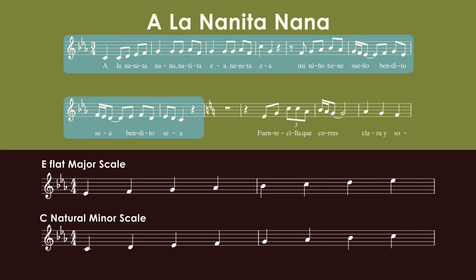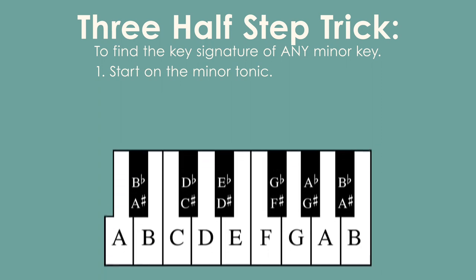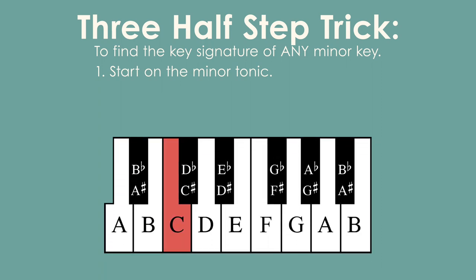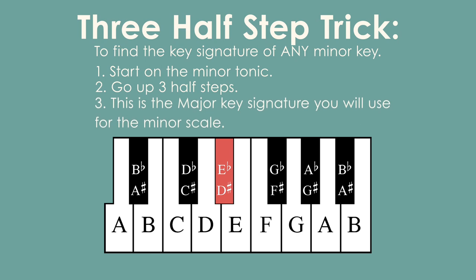We can also check this by doing the three half-step trick. To find the key signature of any minor key, start on the minor tonic — in this case C natural — and go up three half steps. This gives you the major key signature you will use for the minor scale, in this case E flat major. So the C minor scale uses the same key signature as E flat major.